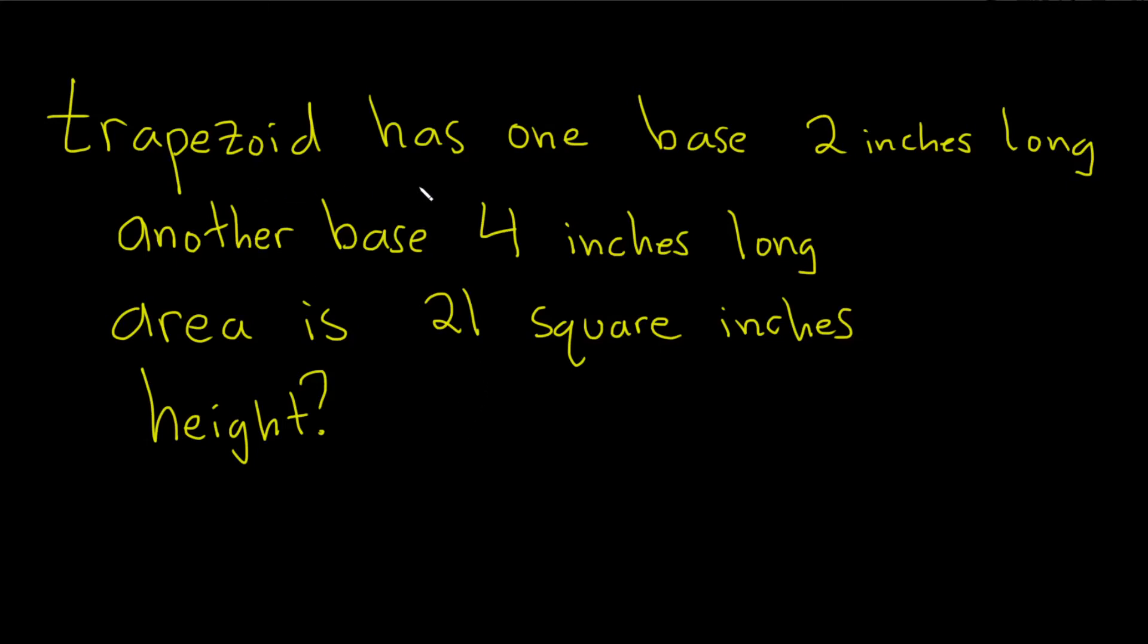We're told that a trapezoid has one base that's two inches long, another base four inches long, and the area is 21 square inches. We want to find the height.